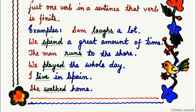Examples: Sam laughs a lot. We spend a great amount of time. The man runs to the shore. We played the whole day. I live in Spain. She walked home. The underlined words, or the green colored words, are our finite verbs. Thank you.